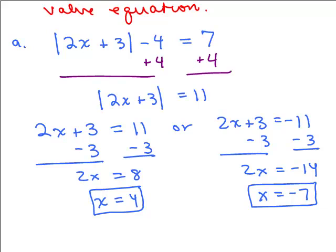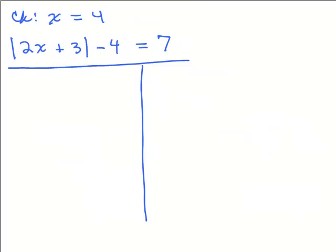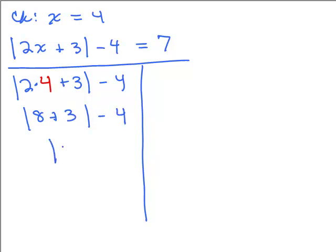Now we want to check each solution. Let's check x equals 4 — plug in 4 for x and simplify the left-hand side. You have to simplify inside the absolute value signs. Inside, do multiplication first: 8 plus 3, bring down the minus 4. 8 plus 3 is 11, so we have the absolute value of 11, which is 11. Then 11 minus 4 is 7, and the right side is already 7. So 4 is definitely a solution.